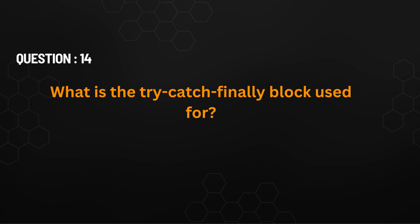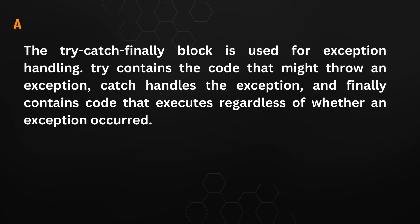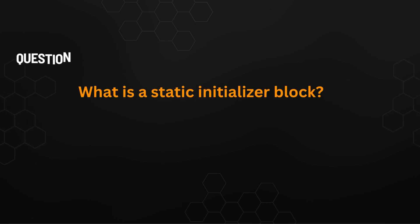What is try-catch-finally block used for? Try-catch-finally block is used for exception handling. Try contains the code that might throw an exception, catch handles the exception, and finally contains code that executes regardless.